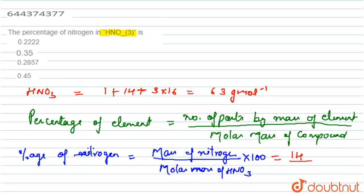Therefore, the percentage of nitrogen is 14 divided by 63 into 100, and this is equal to 22.22 percent. Therefore, the percentage of nitrogen in nitric acid is 22.22 percent.